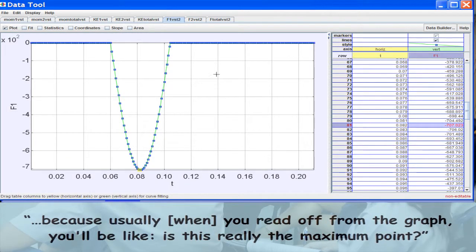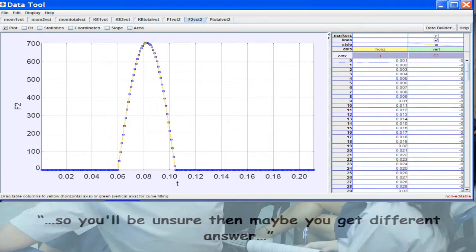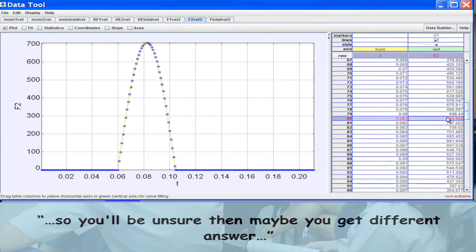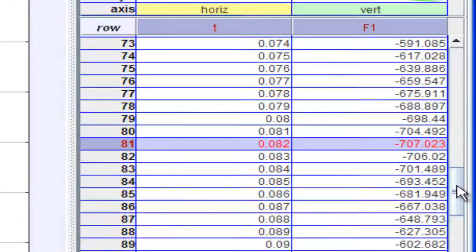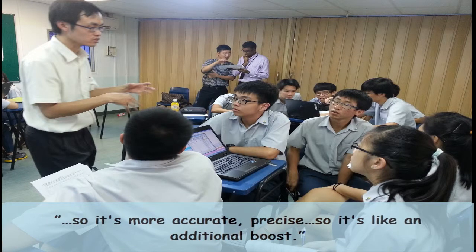Because usually if you read off on the graph, you'll be like, is this really the maximum point? So you'll be unsure, then maybe you'll get a different answer. But if you have the table there, then you can be very sure which one is the maximum value. So it's more accurate.